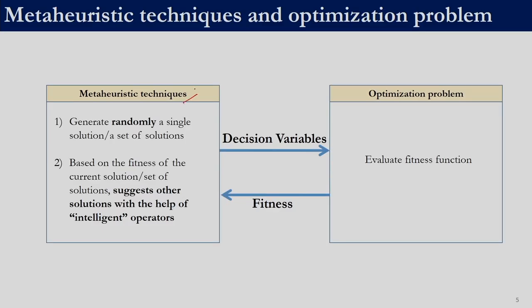This slide shows the communication between metaheuristic techniques and the optimization problem. Most metaheuristic techniques randomly generate a single solution or a set of solutions. When we say solutions it is nothing but the value of the decision variables. So if we have a problem with 5 decision variables, then we have a vector of 5 values within the bounds of the problem. Once we generate the solution, those decision variables are sent to the optimization problem and the fitness function is evaluated. That is the only communication between the metaheuristic technique and the optimization problem. For every solution we will get a fitness function value, and that fitness function value is returned back to the algorithm.